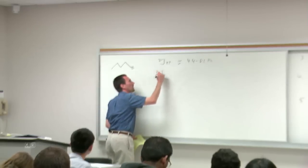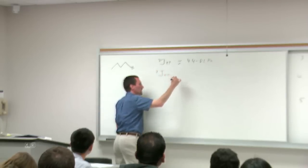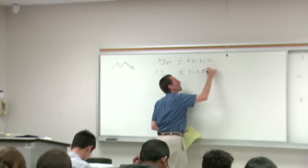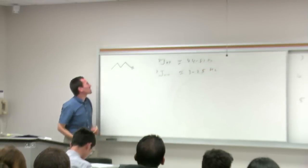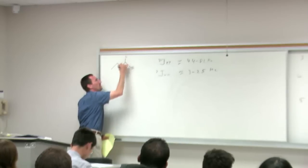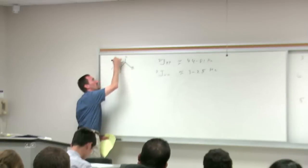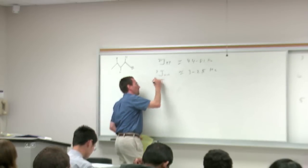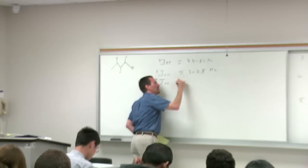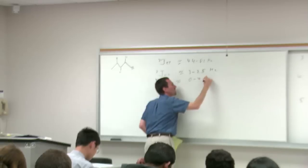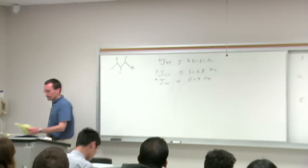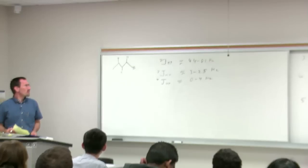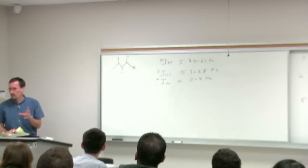Your three-bond HF coupling is on the order of 3 to 25 hertz. Fluorine is so good at coupling that you can even sometimes see a four-bond coupling — J4HF is on the order of 0 to 4 hertz. Part of it is the polarization but part of it is the orbitals that fluorine uses in bonding.